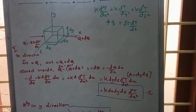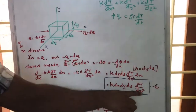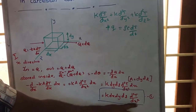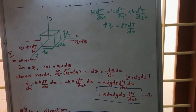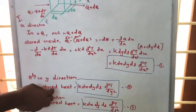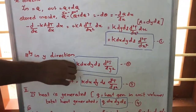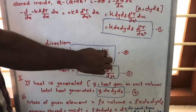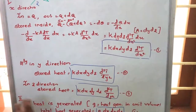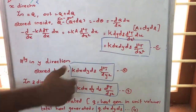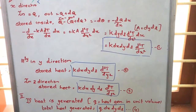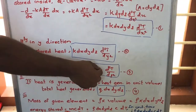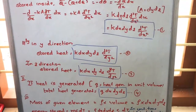In the y-direction, we simply change x to y. So the stored heat equals k·dx·dy·dz·(d²T/dy²). In the z-direction, x is replaced by z, giving k·dx·dy·dz·(d²T/dz²).